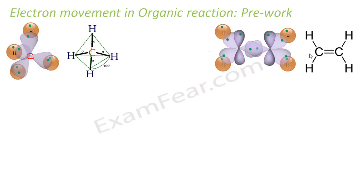We'll talk about ethene. I have my carbon with sp2 orbitals. There is a p orbital here, and these p orbitals form a double bond. These are all my sp2 orbitals.